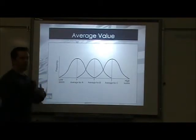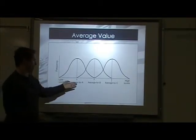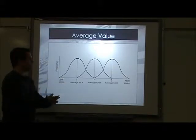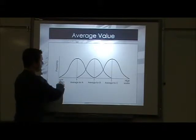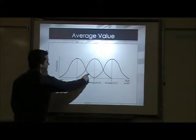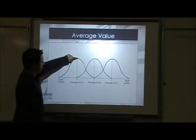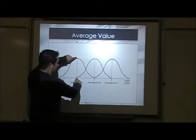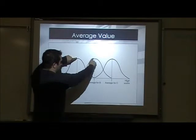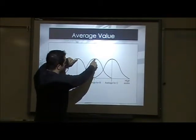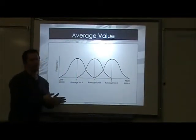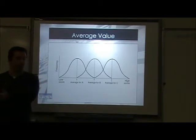We'll start with average value. Average value, which you learned in Chapter 2, is just your mean value. Your means — the middles of your data sets — can be different. If you look at the first one, here's your low score going up to your high score, and your average is different compared to the average for the second data set. These two data sets have different averages, so your picture is going to look different.